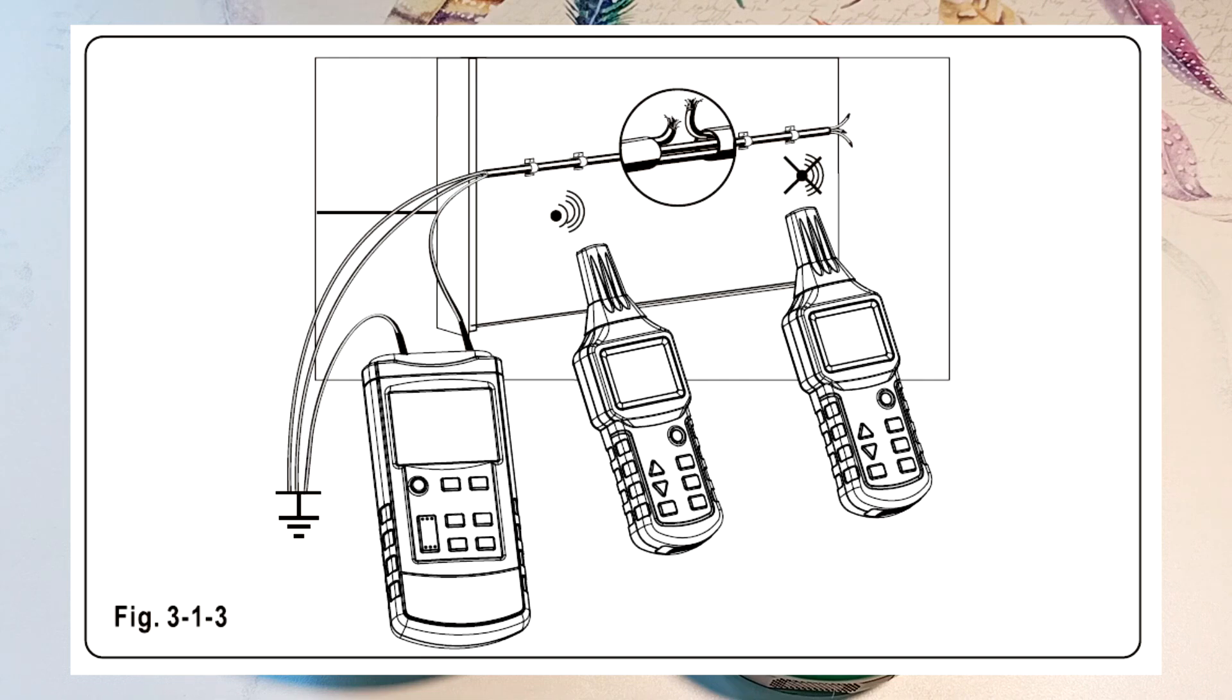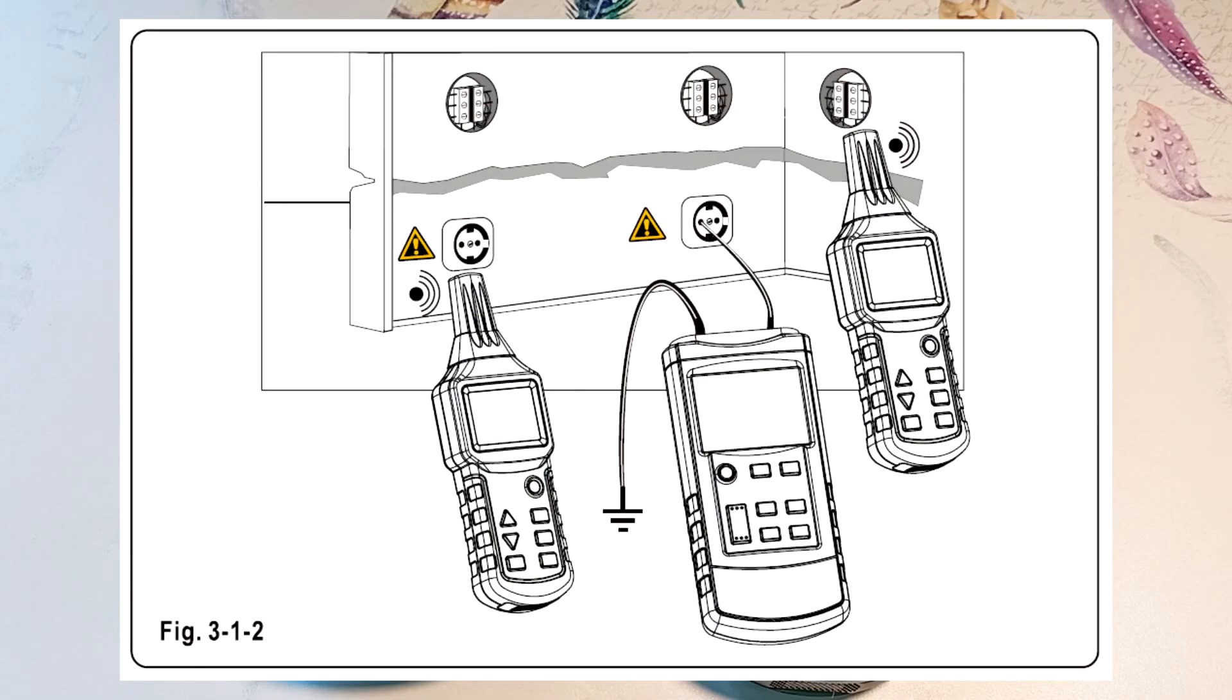When finding breaks, it should be taken into account that the transition resistance at the break must be greater than 100 kilohms. In this figure we find the location of wires, boxes, sockets covered with plaster. We also find line breaks.